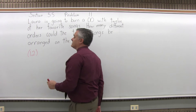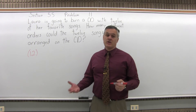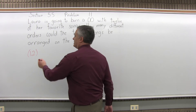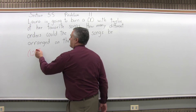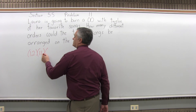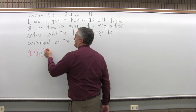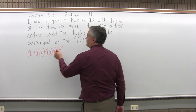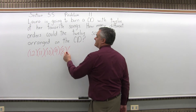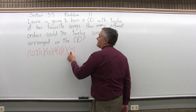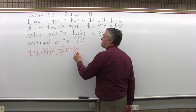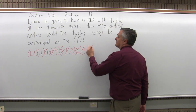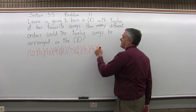Now, for the second song, you'd go down to 11 because you're not going to play the first song twice in a row. So you're down to 11. Now, for the next song, how many choices would you have? You'd have 10. And at this point, you can see how the pattern's going to form. The next one would be 9, then 8, then 7. Every next song you would do, you would have one less choice from the previous song.